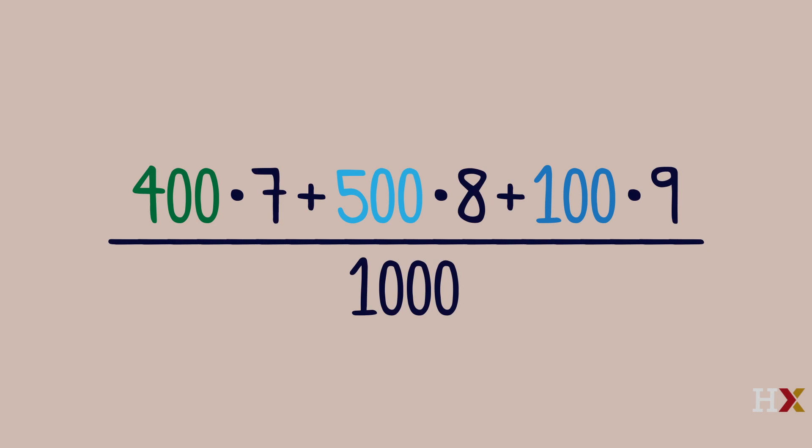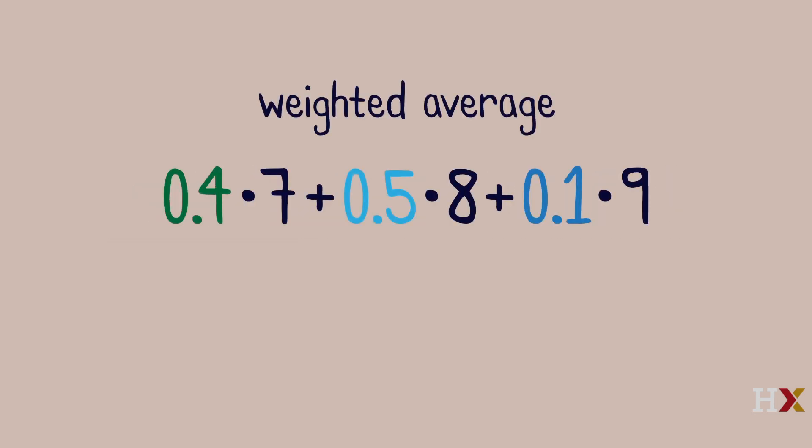The simple average of these outcomes can be written as a weighted average of the possible scores. The weights, 0.4, 0.5, and 0.1, are non-negative numbers that add up to 1.